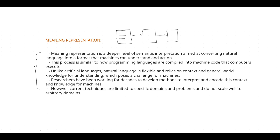The same applies to meaning representation. We write some text, but the machine does not understand it directly. So it converts that text into machine-readable format. After understanding it, the machine can perform operations like text generation or text translation. I explained in my previous video the specific ways to write text so that the machine can understand it.